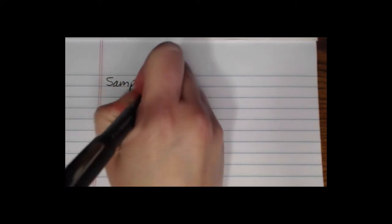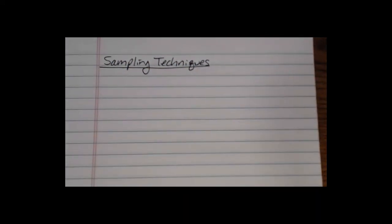In this video we're going to be taking a look at different sampling techniques. You would use a sampling technique when you need to use sample data rather than population data, either because the population data is too difficult or too costly to obtain. You need to use a valid sampling technique. We'll talk about several valid sampling techniques and also one invalid sampling technique.